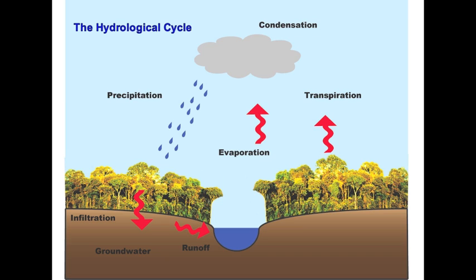The balance of water that remains on the land surface is runoff. This empties into lakes, rivers, and streams and is carried back to the oceans.